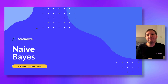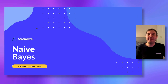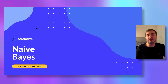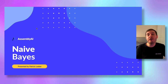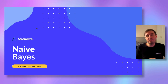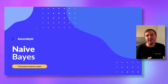Welcome to another video of the Machine Learning from Scratch course presented by AssemblyAI. In this series, we implement popular machine learning algorithms using only built-in Python functions and NumPy. In this lesson, we learn about Naive Bayes. As always, we start with a short theory section and then jump to the code.